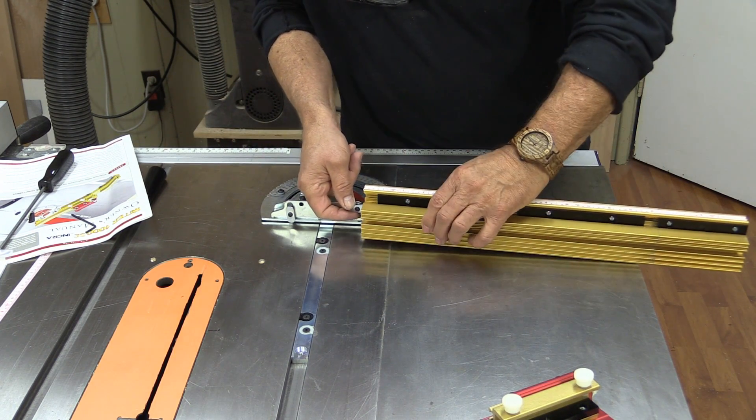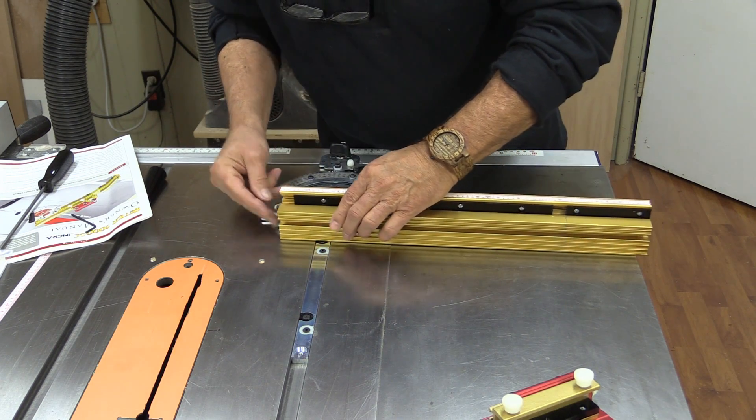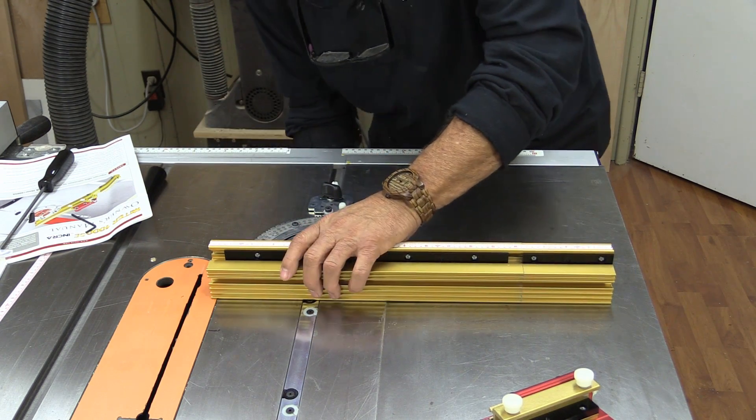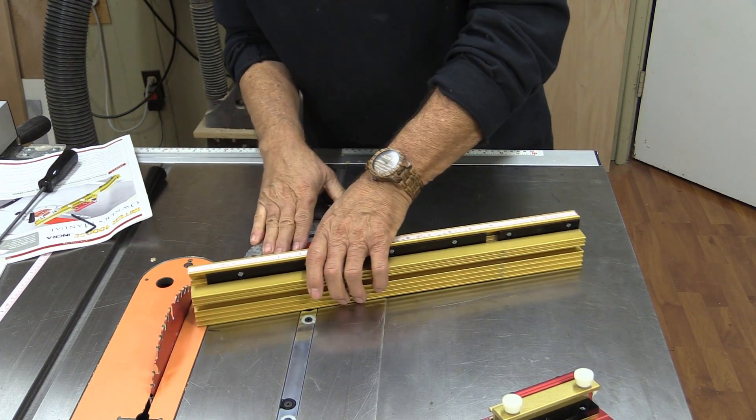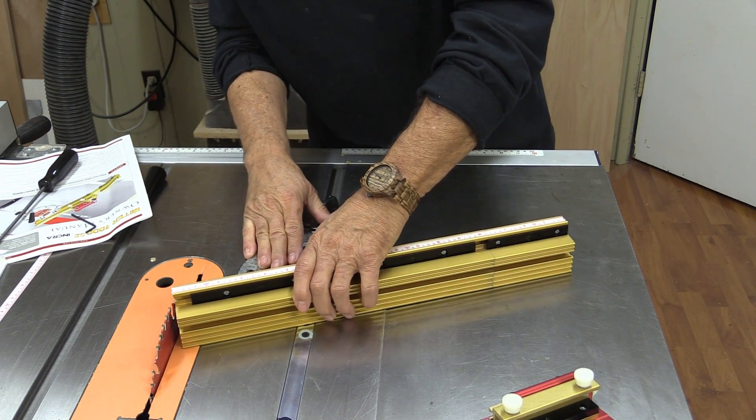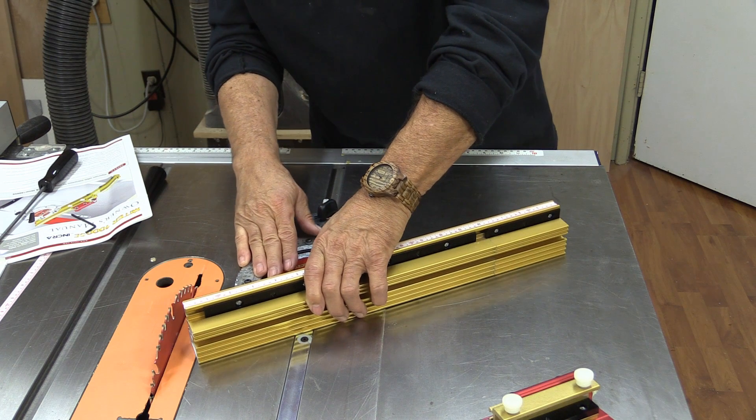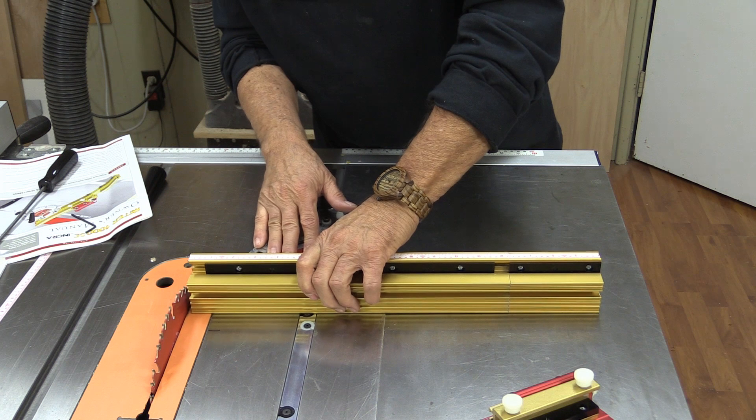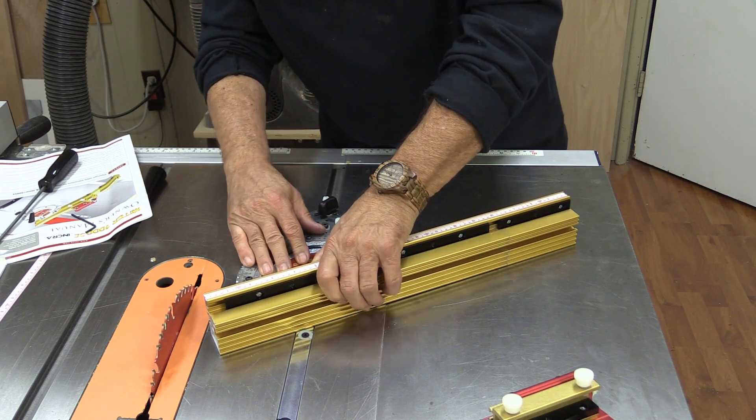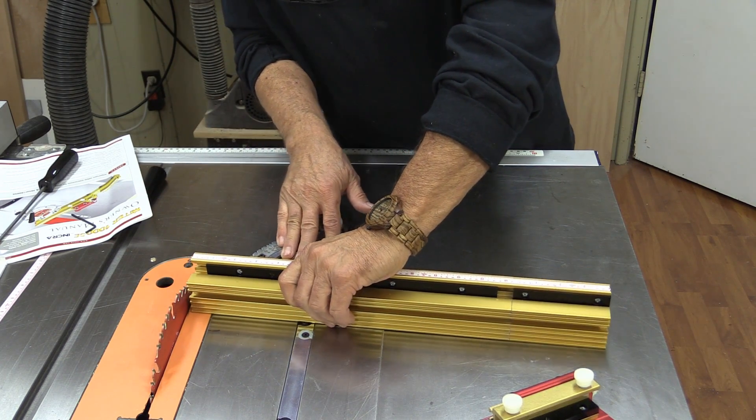The next thing I want to do now is put the fence back together and I'm going to raise my blade just a little bit because I want to set this so that when I'm at any angle, that fence is not going to interfere with my blade.